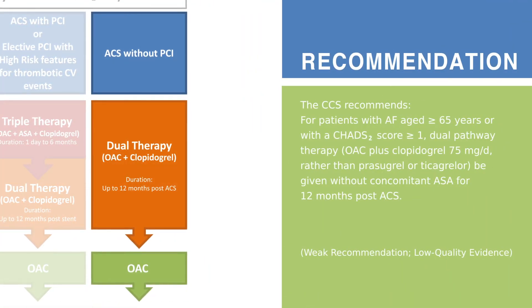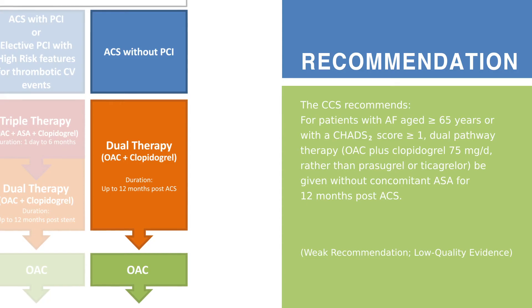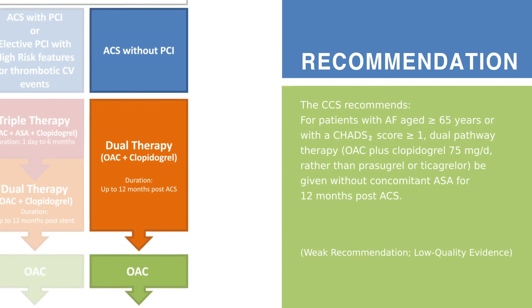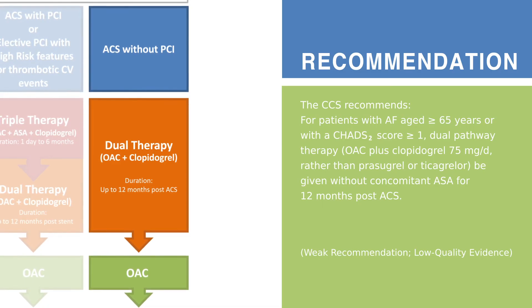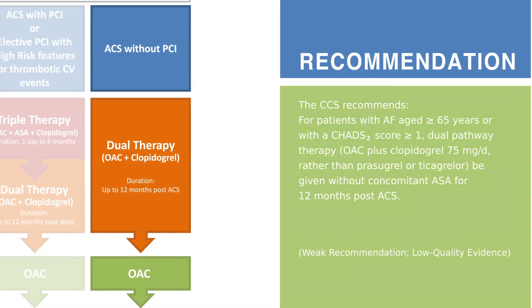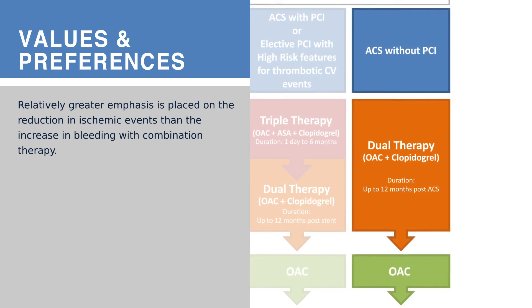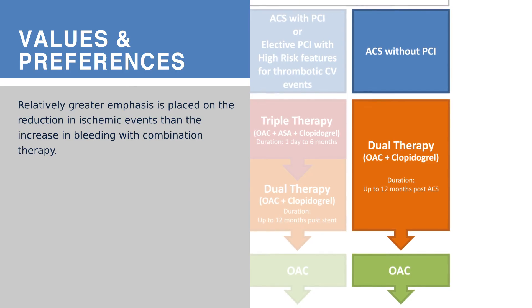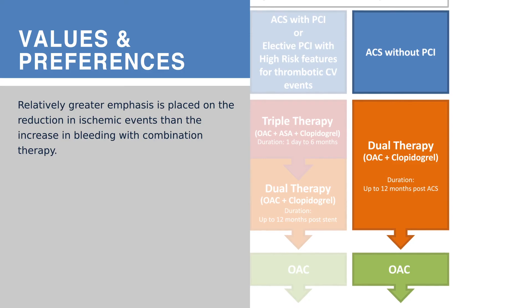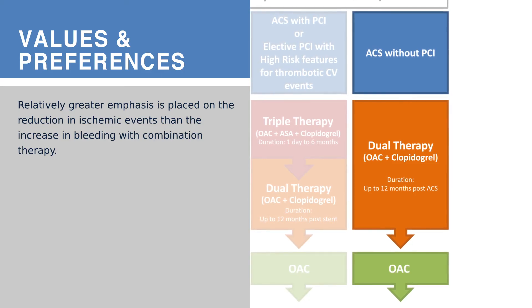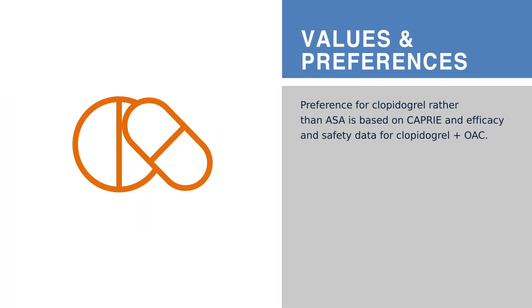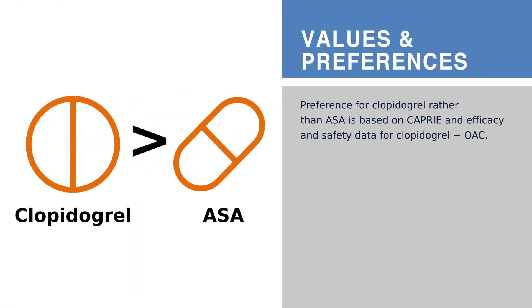For patients with AF aged 65 years or older with a CHADS2 score of 1 or higher who have an acute coronary syndrome and are not undergoing revascularization, the CCS suggests dual pathway therapy consisting of OAC plus clopidogrel 75 mg daily — rather than prasugrel or ticagrelor — without concomitant ASA for 12 months post-ACS. For patients with AF and type 1 myocardial infarction not undergoing revascularization, the CCS AF guidelines committee places relatively greater emphasis on the reduction in ischemic coronary and cerebrovascular thrombotic events rather than the increase in bleeding observed with combination therapy. When combination therapy is used, the preference is for clopidogrel rather than ASA.